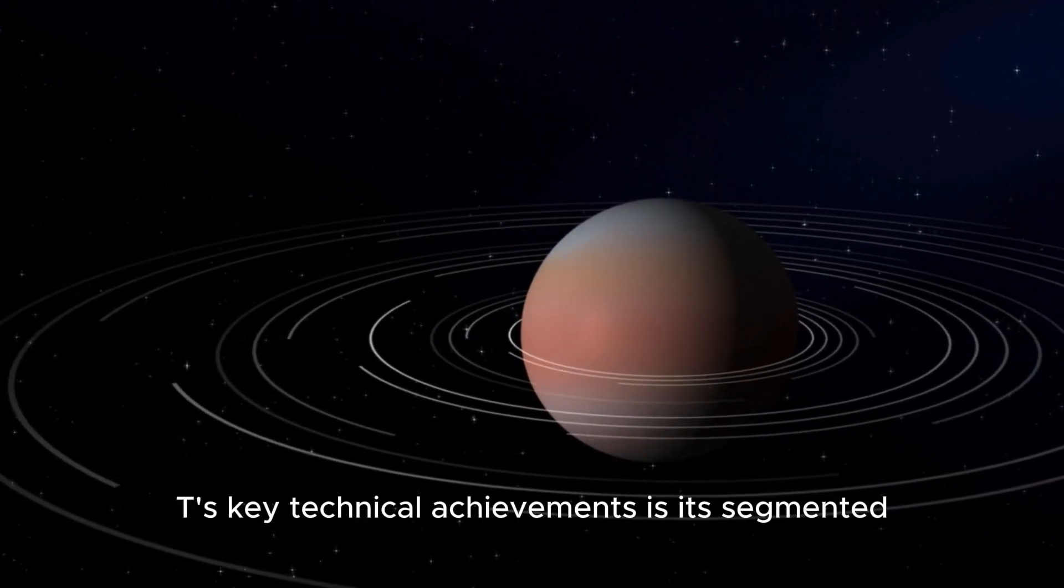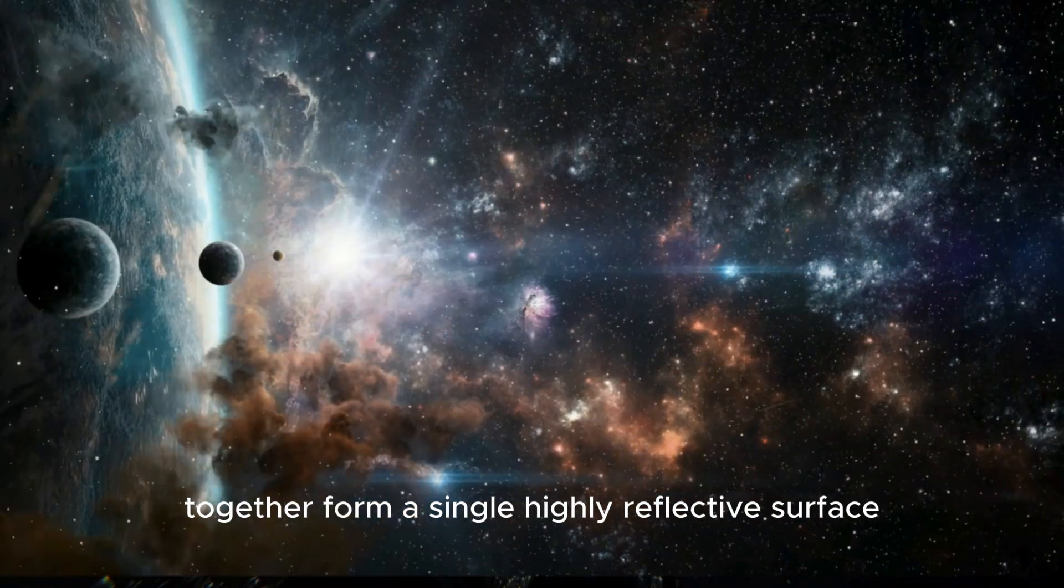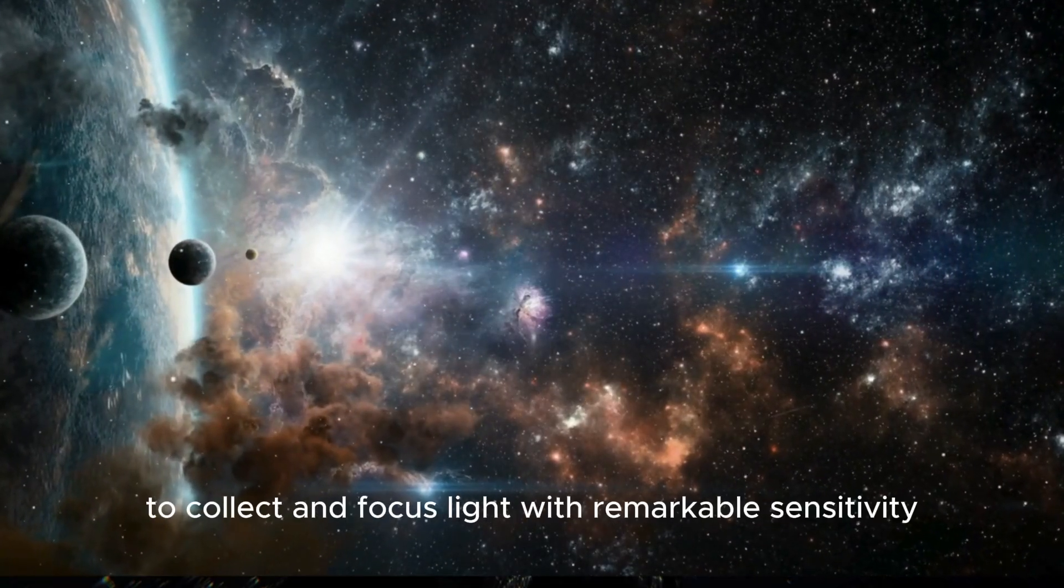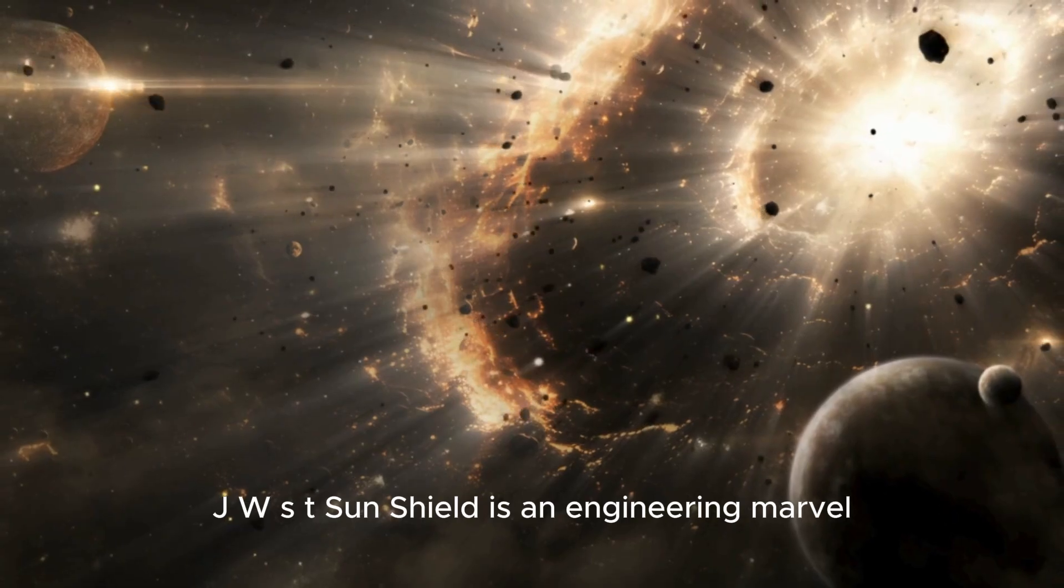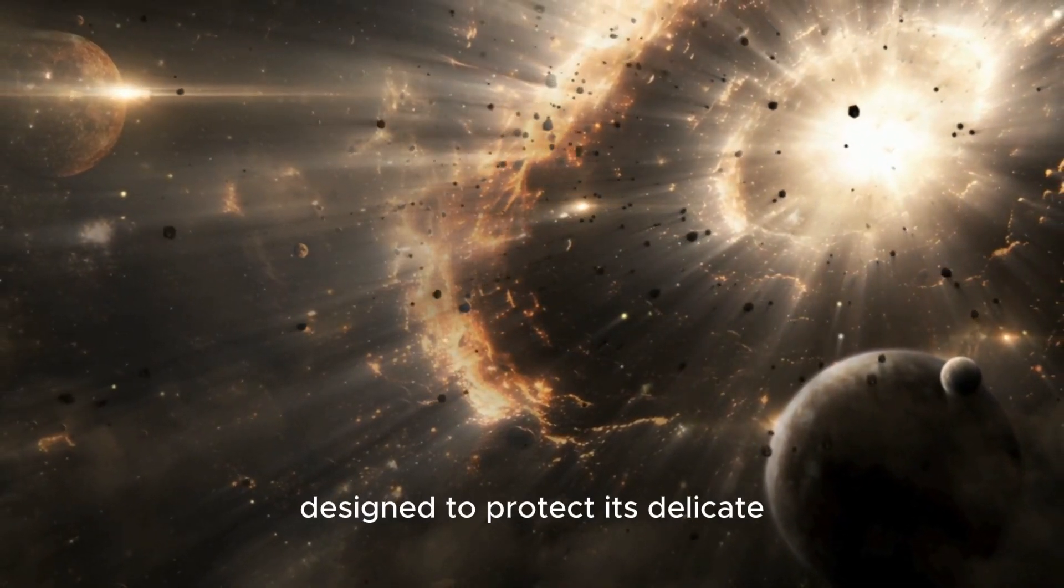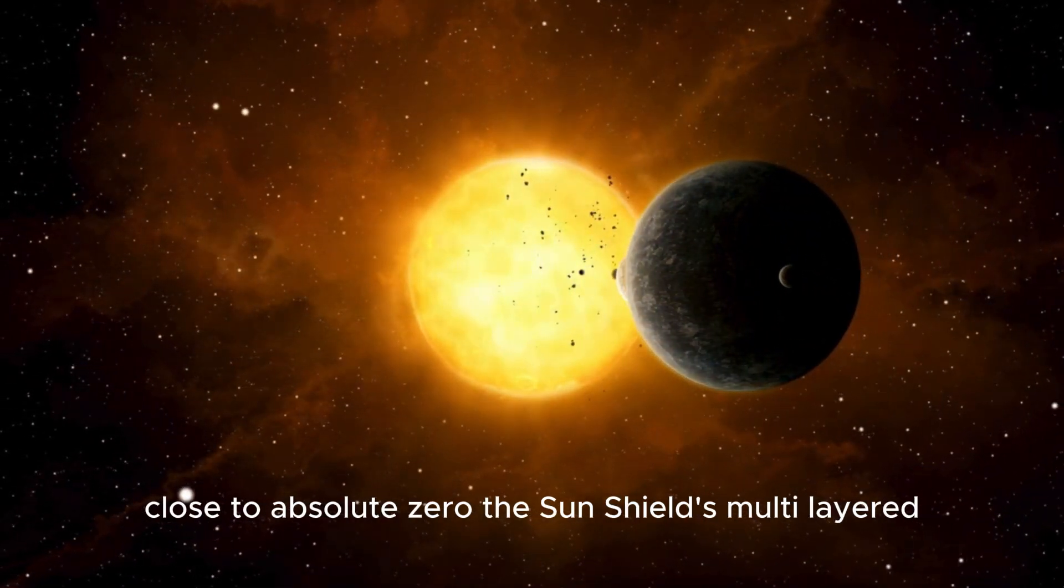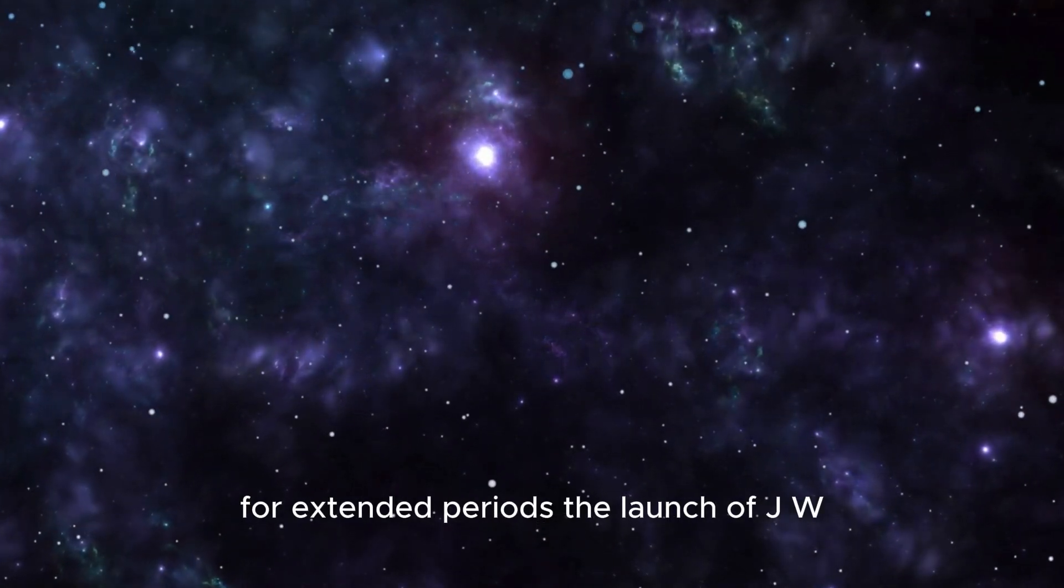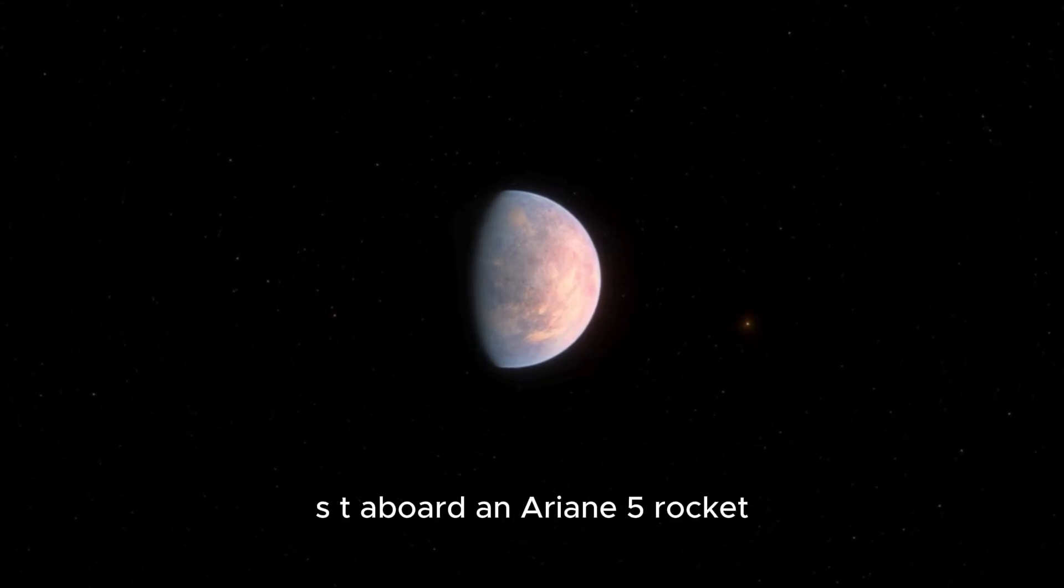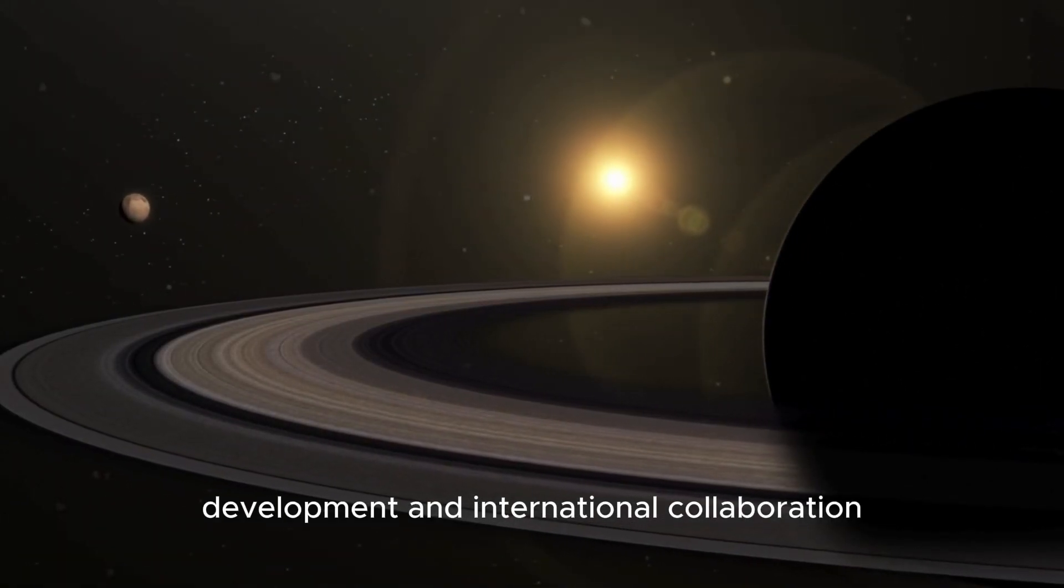One of JWST's key technical achievements is its segmented primary mirror, composed of 18 hexagonal mirrors that together form a single highly reflective surface. This design allows JWST to collect and focus light with remarkable sensitivity. Additionally, JWST's sunshield is an engineering marvel, designed to protect its delicate instruments from the sun's heat and maintain operational temperatures close to absolute zero. The sunshield's multi-layered, specially designed materials provide thermal insulation while ensuring stable observation conditions. The launch of JWST aboard an Ariane 5 rocket marked a monumental milestone in space exploration.